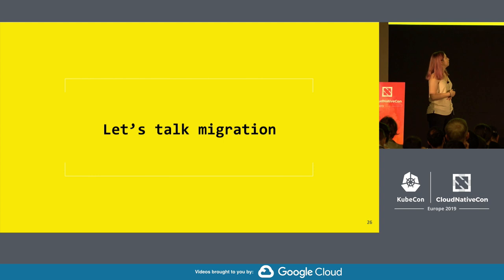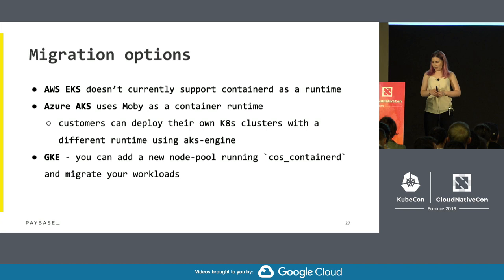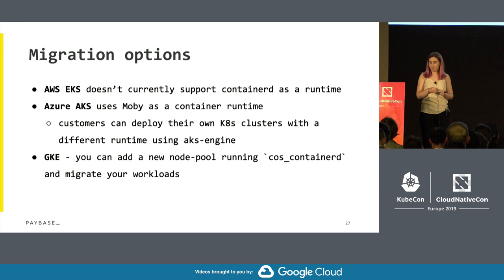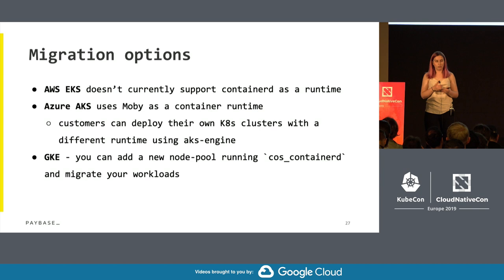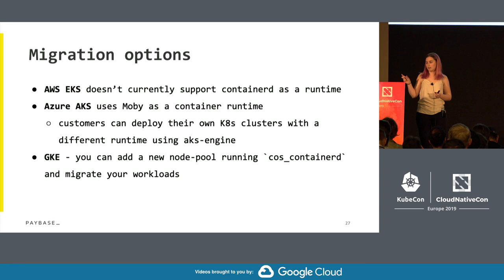So now let's get serious and talk about what it takes to migrate — it's actually quite easy, depending on your setup. AWS EKS doesn't currently support ContainerD as a runtime. Azure AKS uses Moby, a flavor of Docker, as its container runtime, though customers can deploy their own Kubernetes clusters with a different runtime using the AKS engine. And then there's GKE — they support it. The way you'd go about creating a cluster with ContainerD runtime would be selecting the COS ContainerD image, or creating a new node pool in an existing cluster and migrating the workloads.